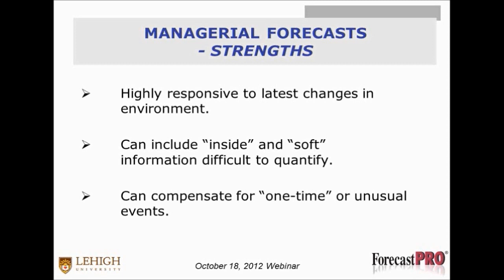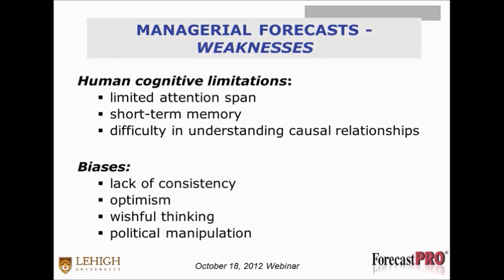Managerial strengths: they're highly responsive to the latest changes in the environment. They can include a lot of insight or soft information that's difficult to quantify, and include one-time or unusual events. For example, Belvedere International in Canada makes body lotions. When the SARS epidemic hit Toronto, they made an overnight decision to switch their entire production from lotion to hand sanitizer — simply understanding that the SARS epidemic was hitting. This is the latest information, and it would take a long time to model that. This is where managerial judgment comes into play.